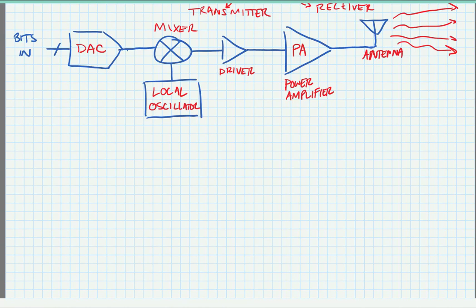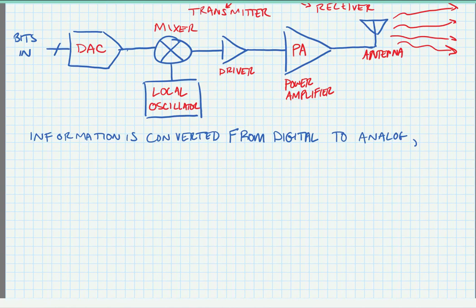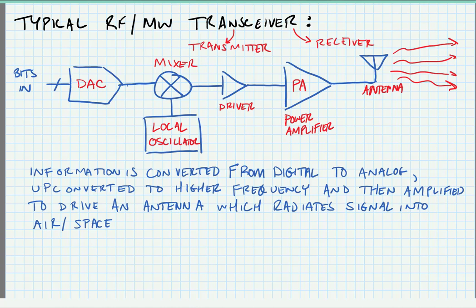What's happening in this chain is the information in the signal is converted from digital to analog, then up-converted to higher frequency, and then amplified to drive an antenna which radiates the signal into space. This is a simplified drawing of a transmitter — there are many different architectures that improve on the basic functionality of this one, but all of the basics are shown here.